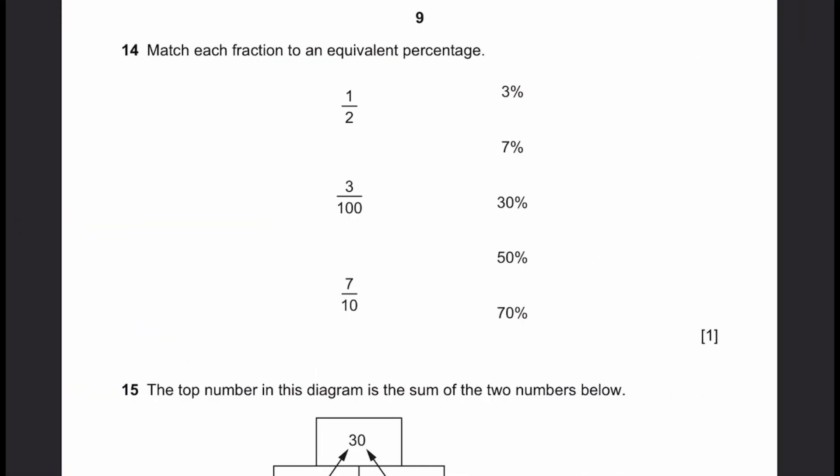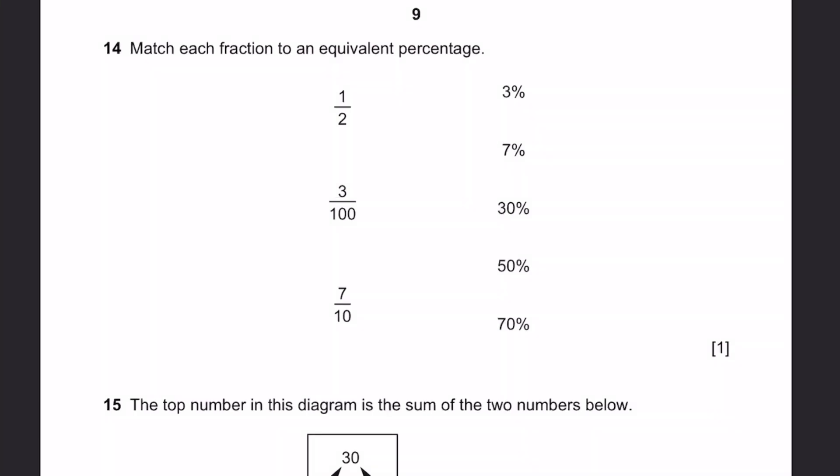Question 14. Match each fraction to equivalent percentage. This is quite a simple question. So we can see 1 by 2. Multiply both sides by 50 to get the denominator as 100. 50 by 100. And now the top number, the numerator, is the percentage value. So 1 by 2 is 50%. Using the same thing, the denominator is already 100. 3 is the numerator. Because of that, 3%. And 7 by 10. Multiply both sides by 10. We get 70 by 100. That means 70%. That's the answer.